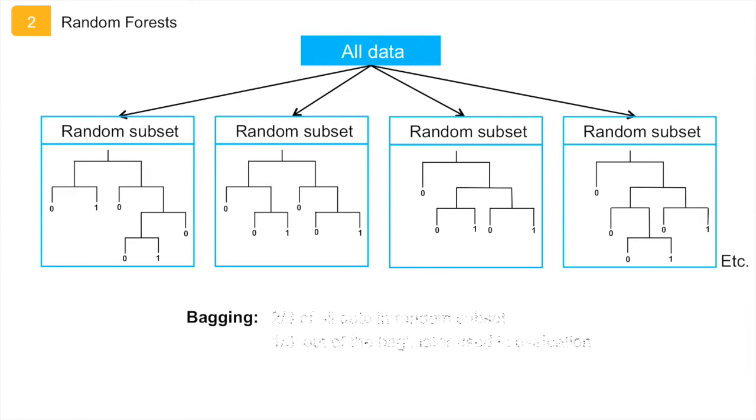About two thirds of the data is included in each random subset, and the other third of the data is not used to build the trees. This part is called the out of the bag data and is later used to evaluate the model.